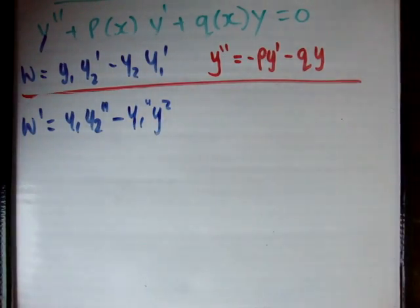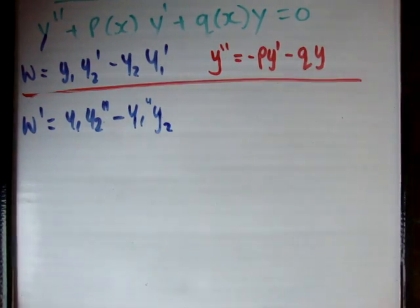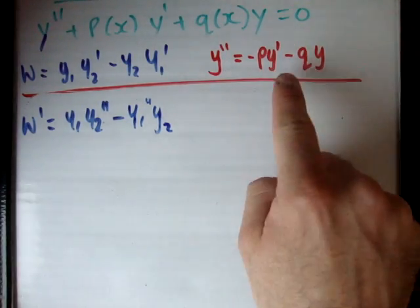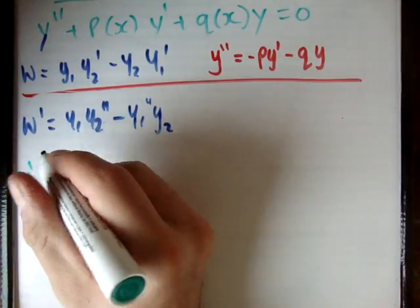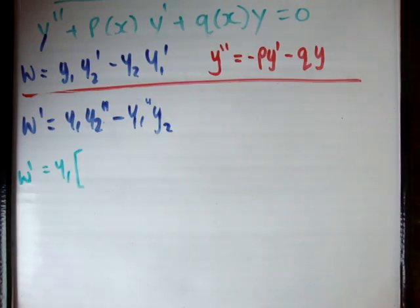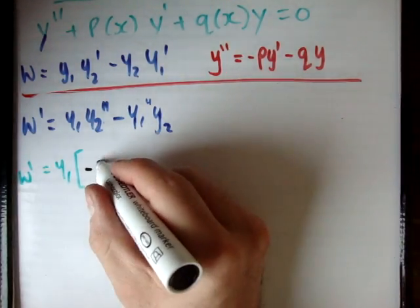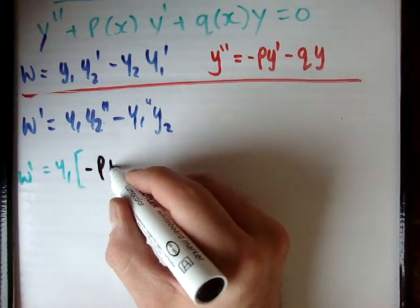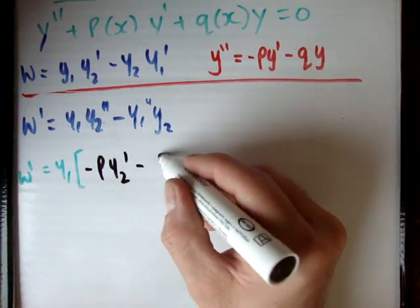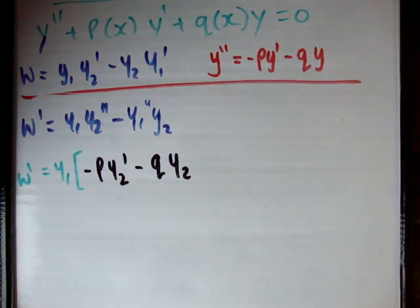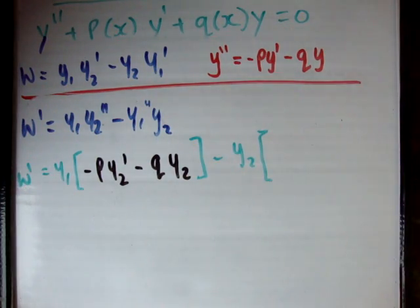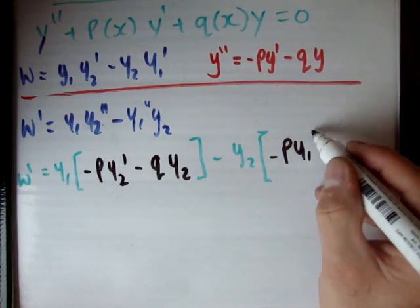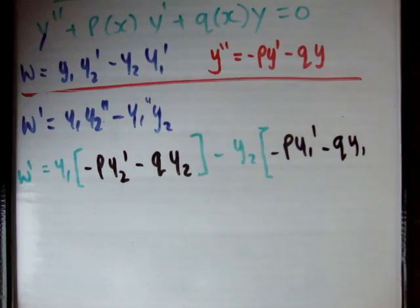That is the derivative of the Wronskian: W' = y1·y2'' - y1''·y2. We also know what y double prime is, so let's plug in y double prime for both y1 and y2. We get W' equal to y1 times (negative p·y2 prime minus q·y2), minus y2 times (negative p·y1 prime minus q·y1).